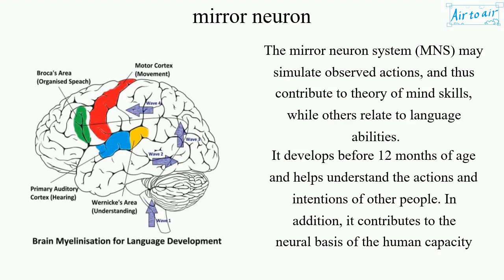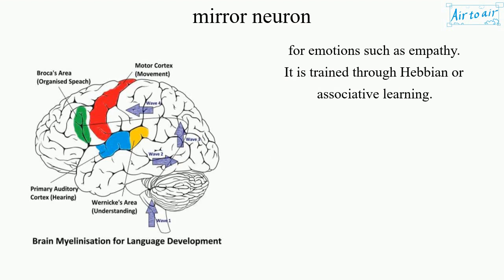In addition, it contributes to the neural basis of the human capacity for emotions such as empathy. It is trained through heavy and/or associative learning.